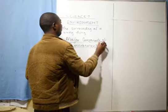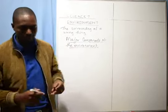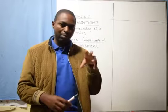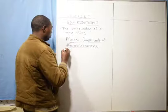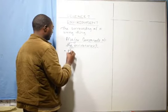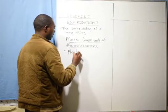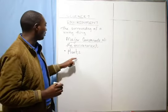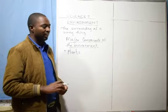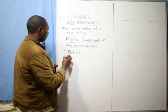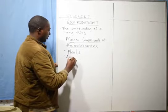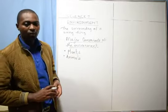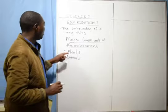We have five major components because they are the origin of all others. One of them is what we call plants. Plants are major components of the environment — they are a source of food. Number two, we have the animals. The animals are other components of the environment.